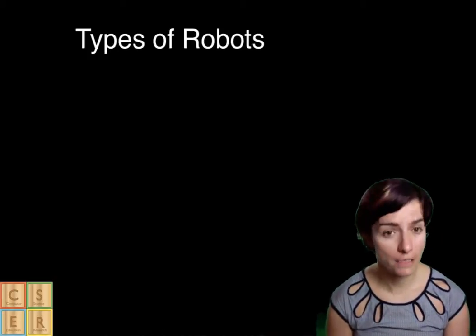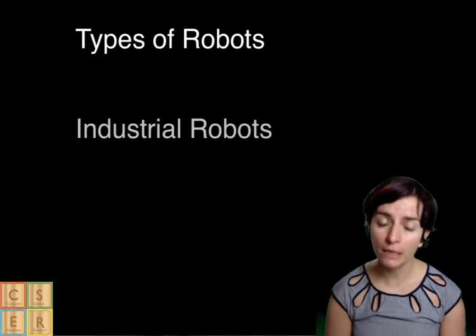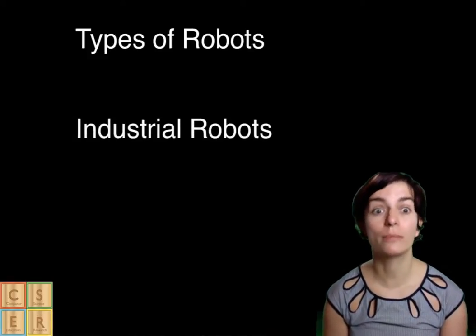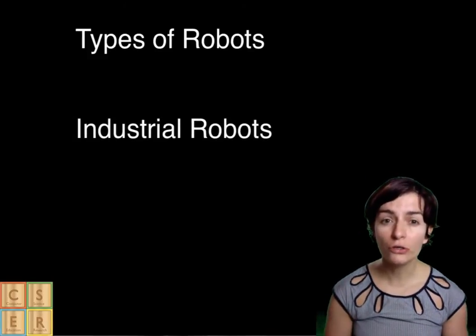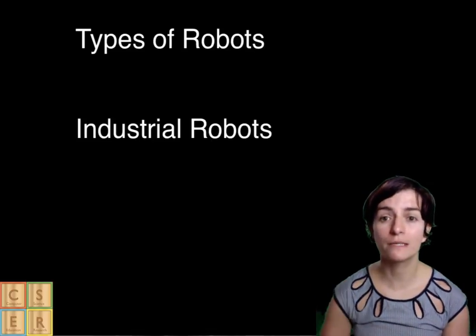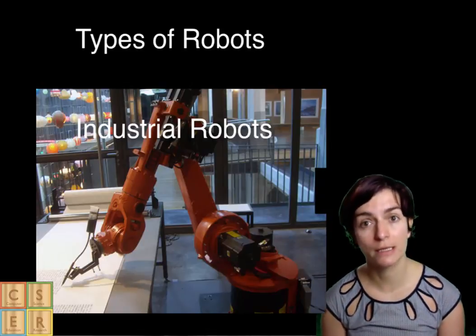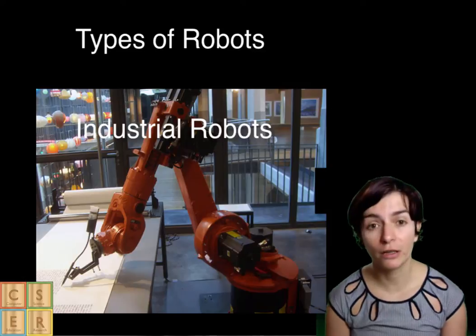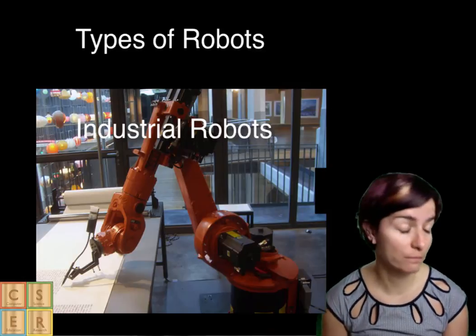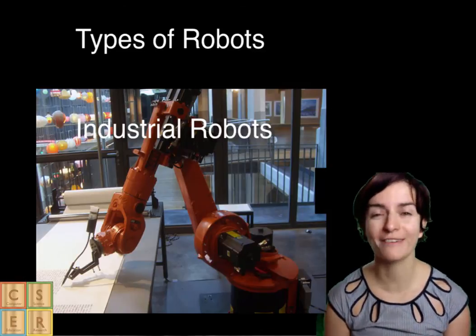These are industrial robots. Industrial robots are used in an industrial manufacturing environment. Usually, they are articulated arms specifically developed for such applications, such as welding, material handling, painting, assembling car parts, and others.